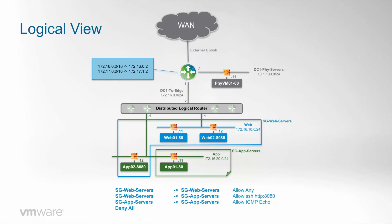We will take that a step further: we will move the app02 VM to the web service group and see how the security policies are automatically changed. The app02 VM will be able to talk freely with the web VMs, but can only talk SSH and HTTP 8080 with the other VM on its own IP subnet. This enforces more security inside one IP subnet than across IP subnets — the opposite of traditional security environments — showing how powerful the NSX security model is.